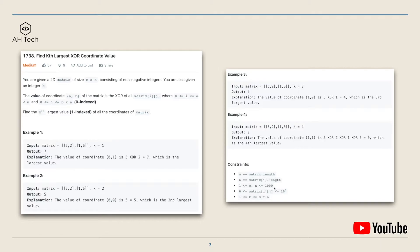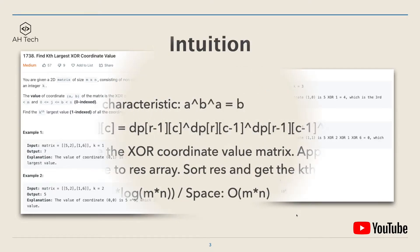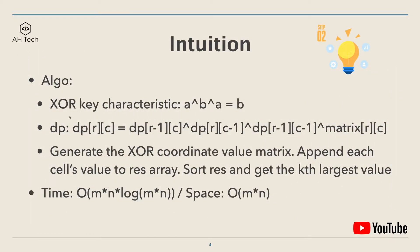The data constraint for this question: the size of the input matrix will only go up to 1000. To solve this question, the first thing we have to know is a key characteristic of the XOR operator, which is a XOR b XOR a will be equal to b.